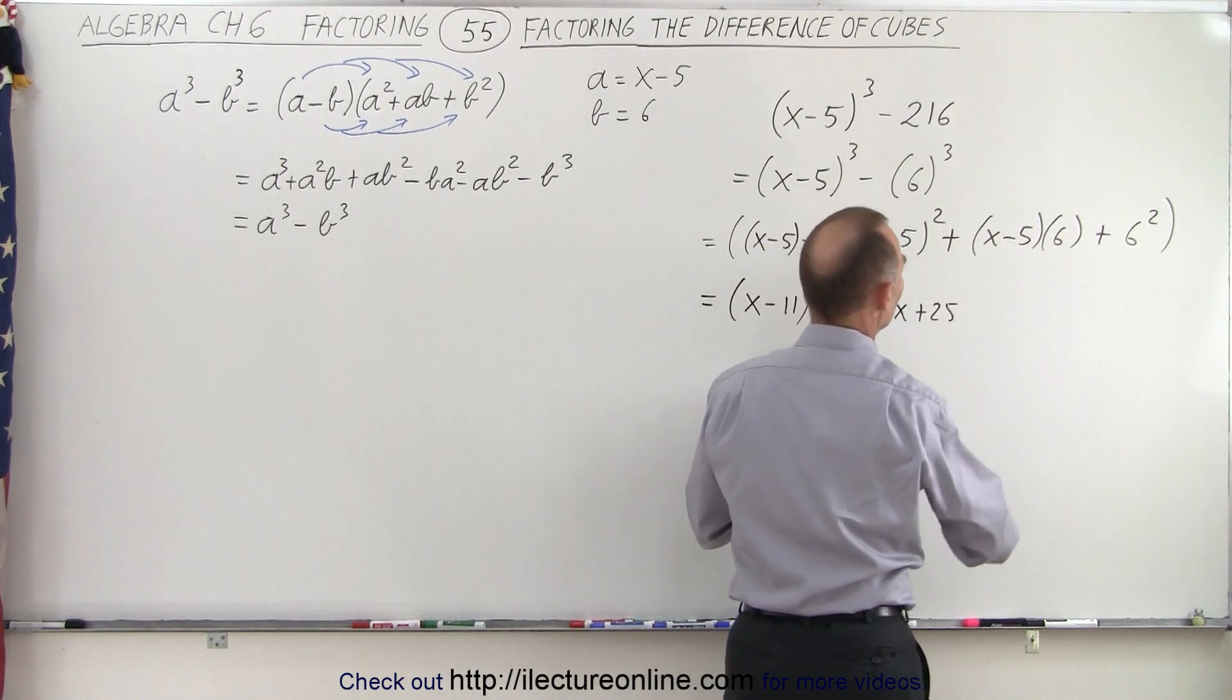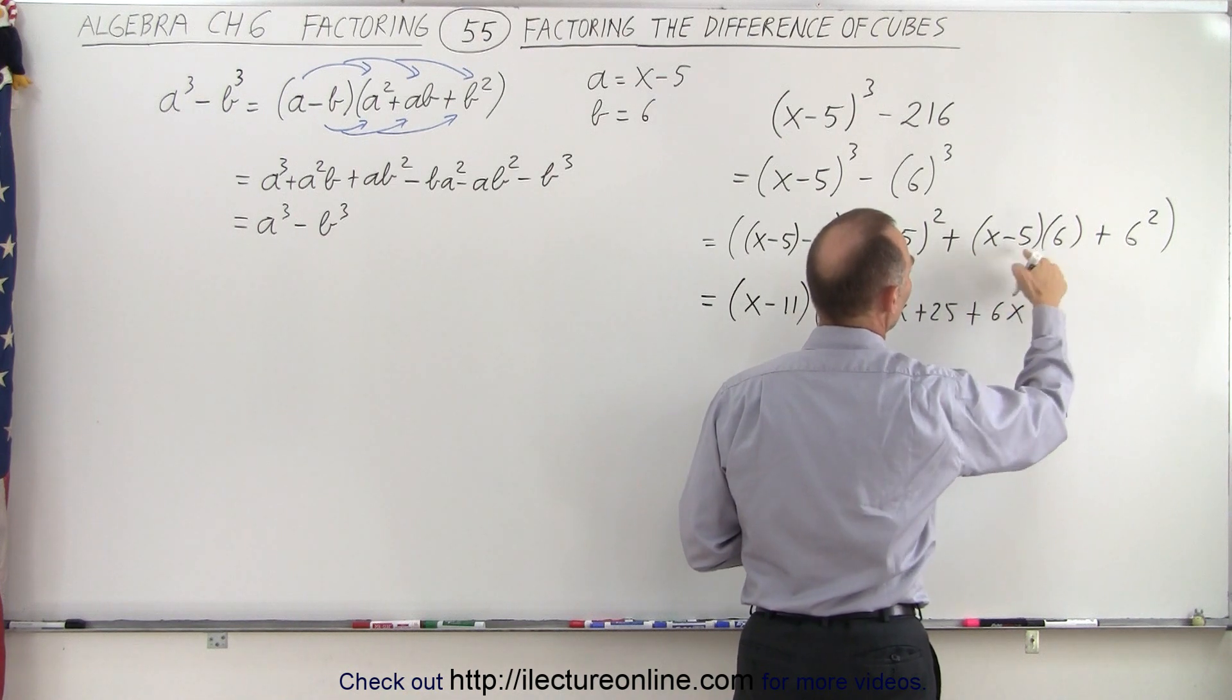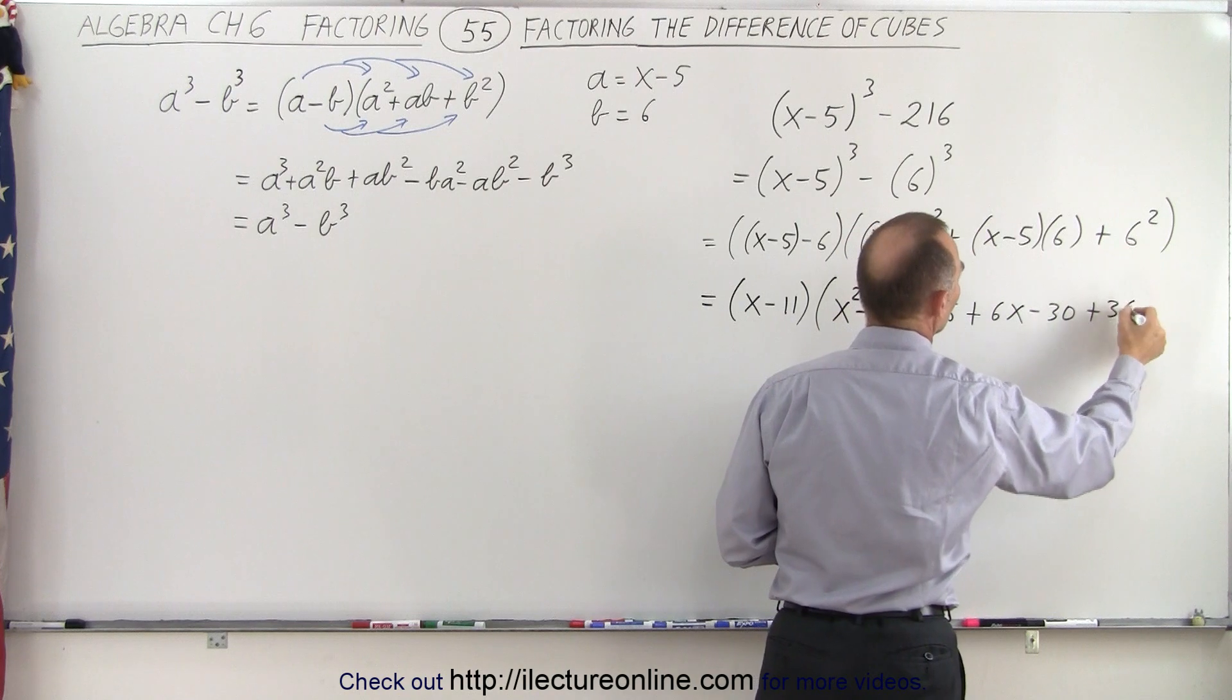Then here we can multiply this through, so plus 6 times x is 6x, and 6 times the minus 5 is minus 30, and finally plus 36.